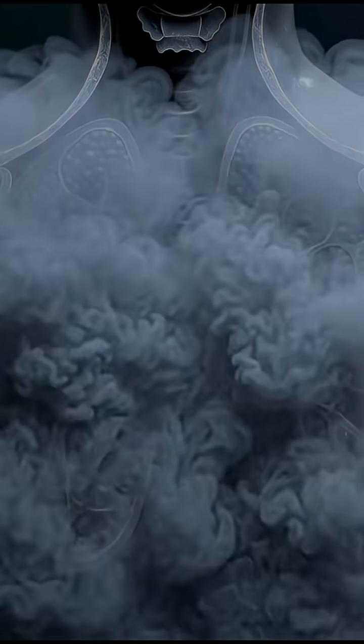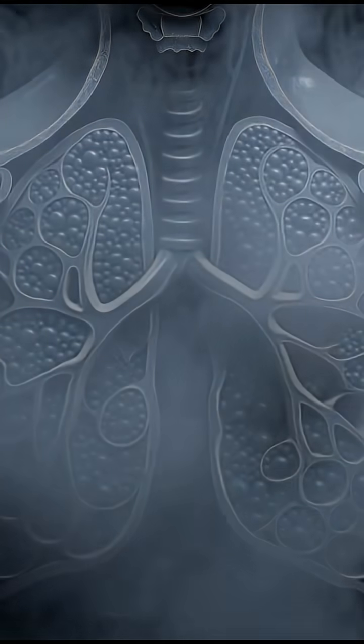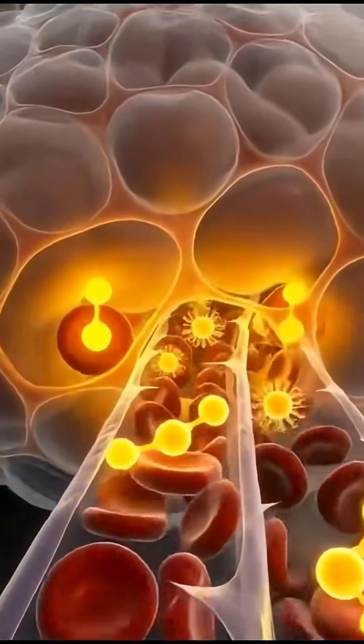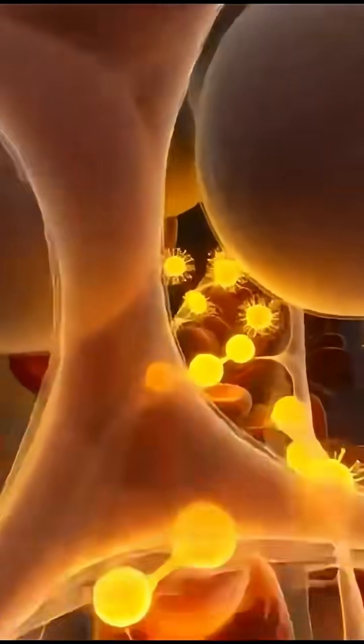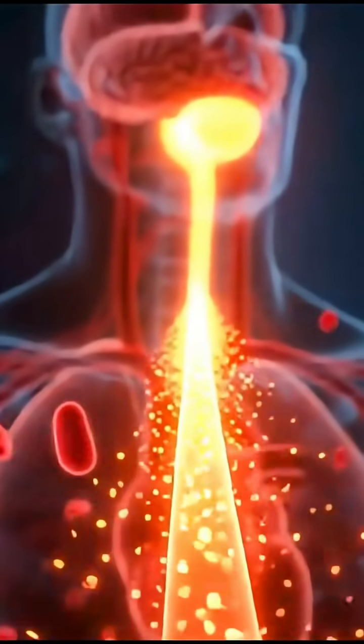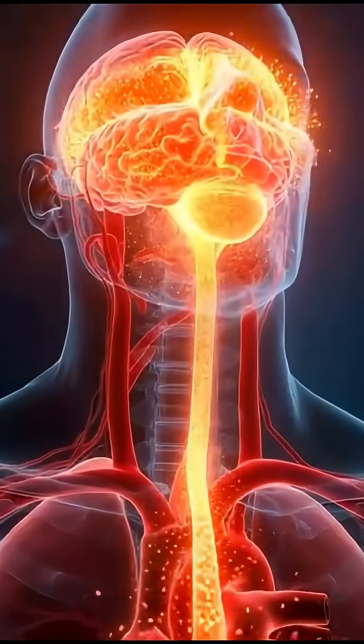Within seconds, nicotine crosses into your bloodstream, rushing to the brain and triggering a surge of dopamine, the pleasure chemical. Your heart rate increases, blood vessels constrict, and oxygen levels begin to drop as carbon monoxide takes the place of oxygen in red blood cells.